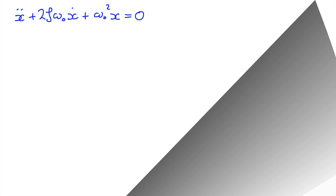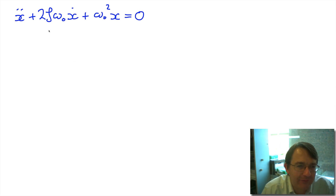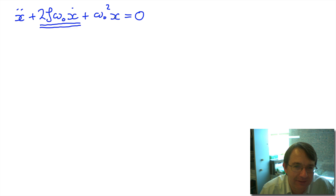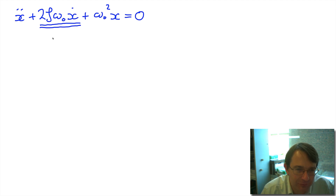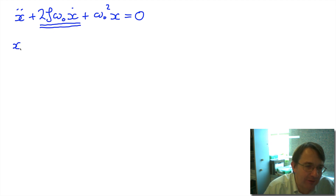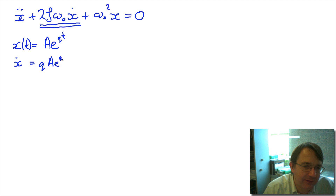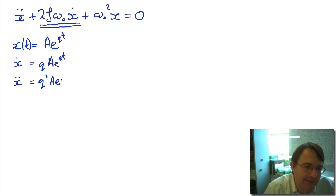The next step is solving the differential equation. With the additional x-dot term, we can't simply guess cosine, because differentiating cosine gives sine, and the terms won't cancel consistently. Instead, we go back to our initial guess from the simple harmonic oscillator derivation and try an exponential: x equals a times e to the qt. Differentiating once gives q times a e^(qt), and differentiating a second time gives q-squared times a e^(qt).